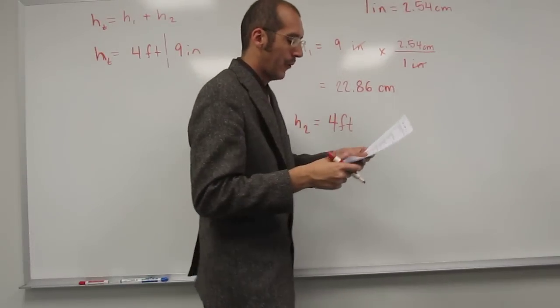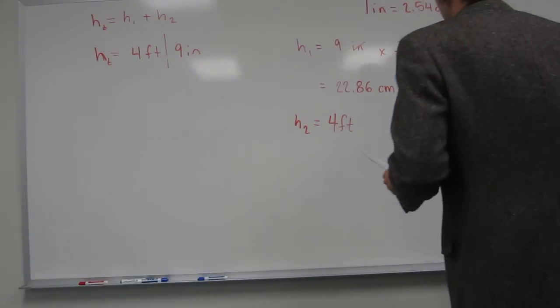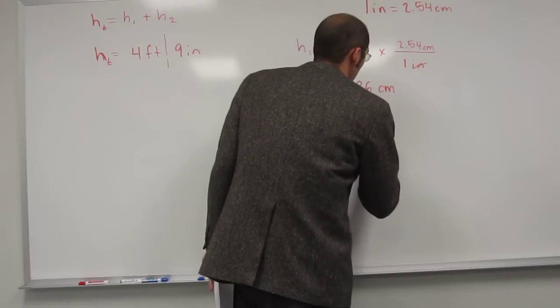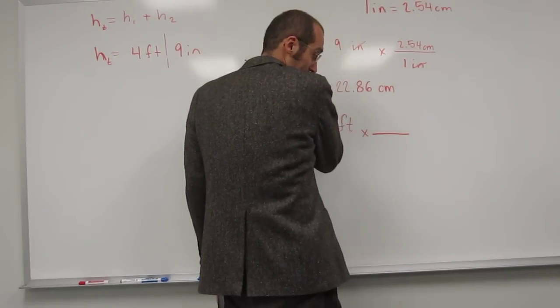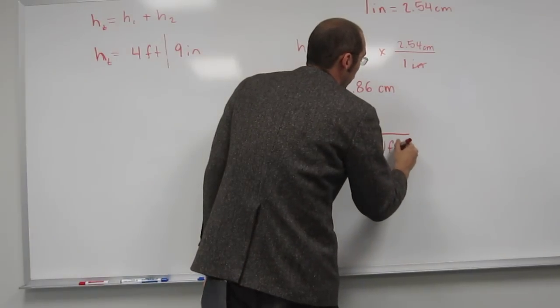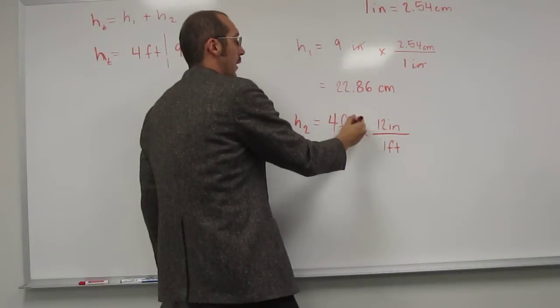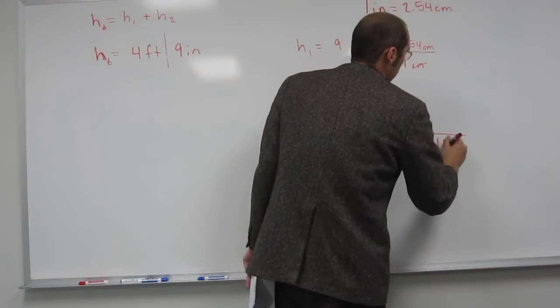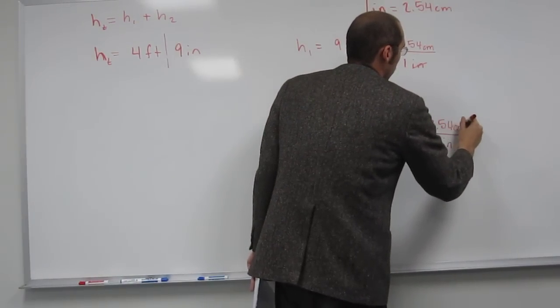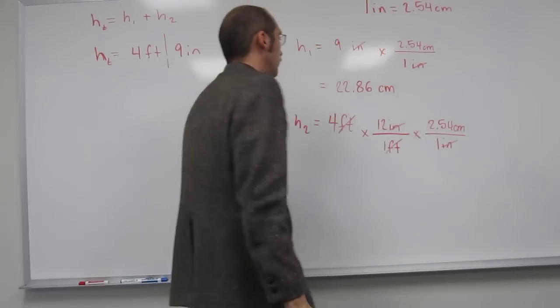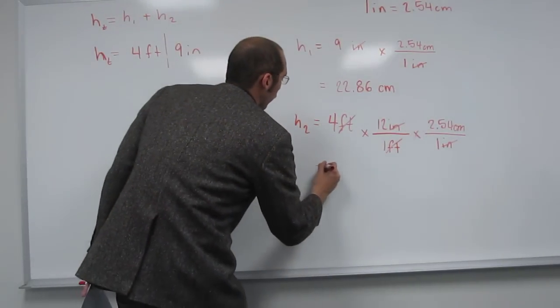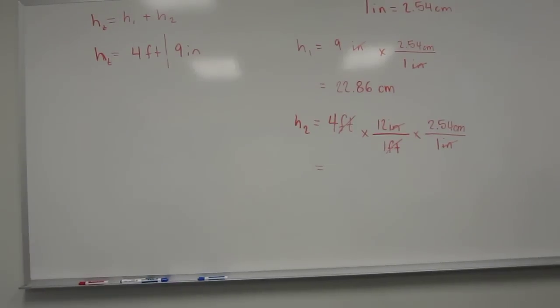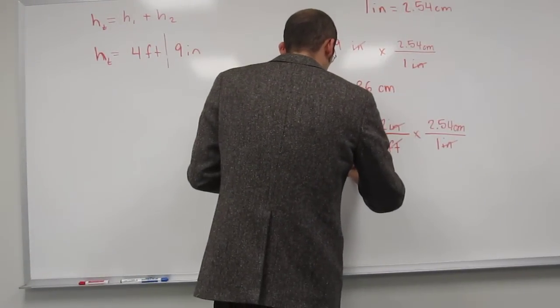You know this conversion factor isn't given to you in the problem, but you know that 1 foot is 12 inches. So if you've got this conversion factor, 1 foot 12 inches, that's going to cancel out your feet and give you inches. Then we're going to take that, like you said, 1 inch, 2.54 centimeters, cancel, cancel. And then let's multiply it out, 4 times 12 times 2.54, and just keep all of your significant figures for right now.